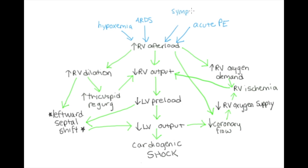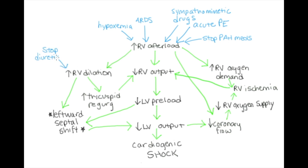Other insults to RV afterload include ingestion of cocaine or methamphetamines, or for outpatients with known group 1 pulmonary arterial hypertension, sudden cessation of their PAH treatments causes an acute increase in RV afterload. RV dilation could worsen if a patient stops taking their diuretics or has heavy dietary salt intake, and patients with chronic PAH may become very ill if something compromises coronary flow to the RV, like another cause of hypotension, sepsis, hypovolemia, or an acute right coronary artery thrombosis from CAD.